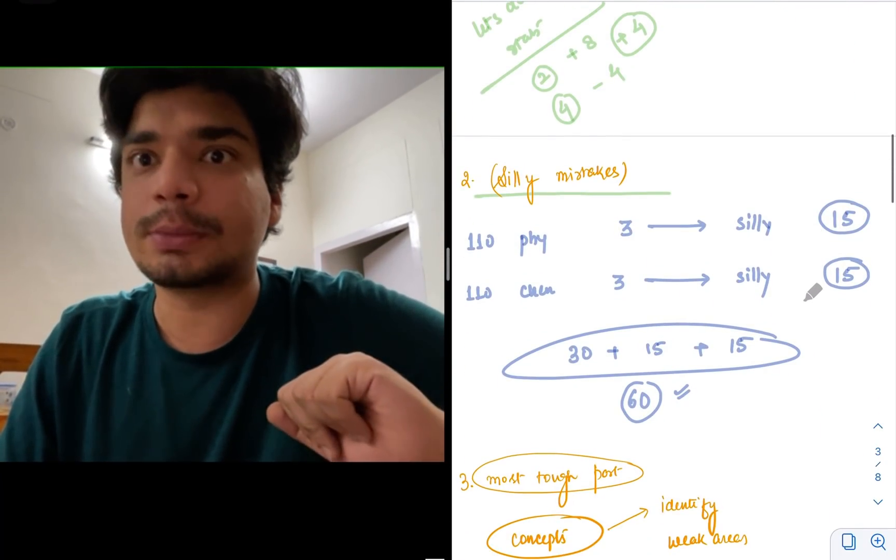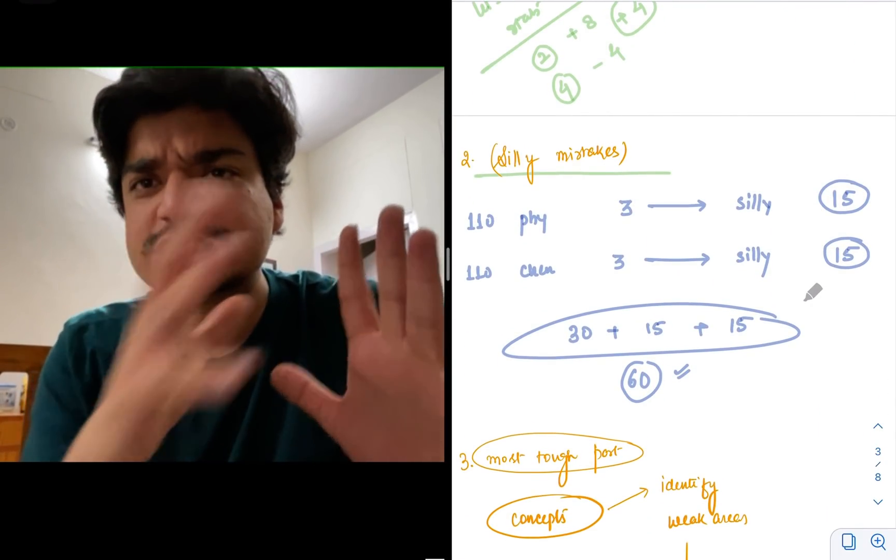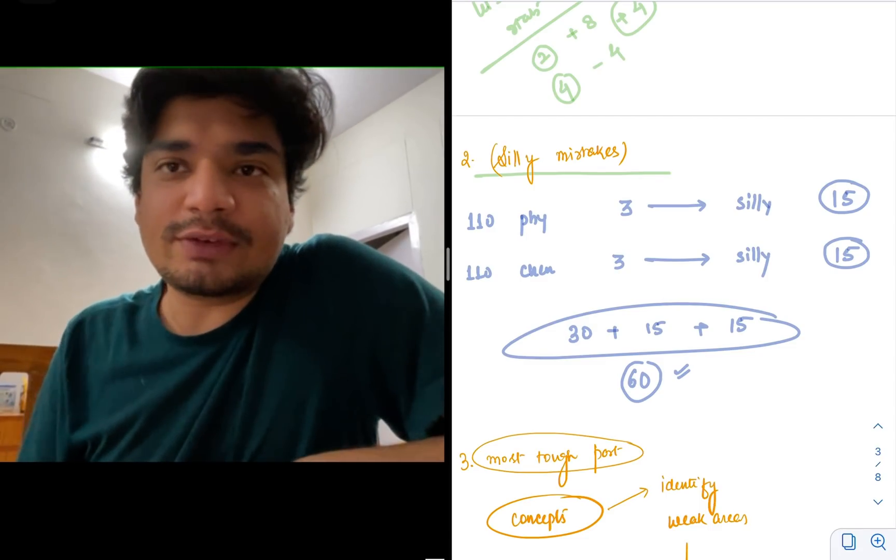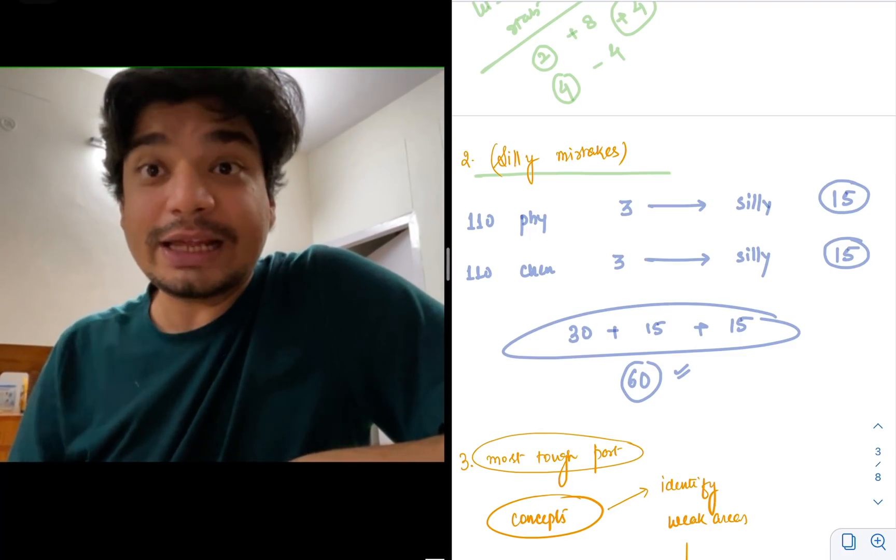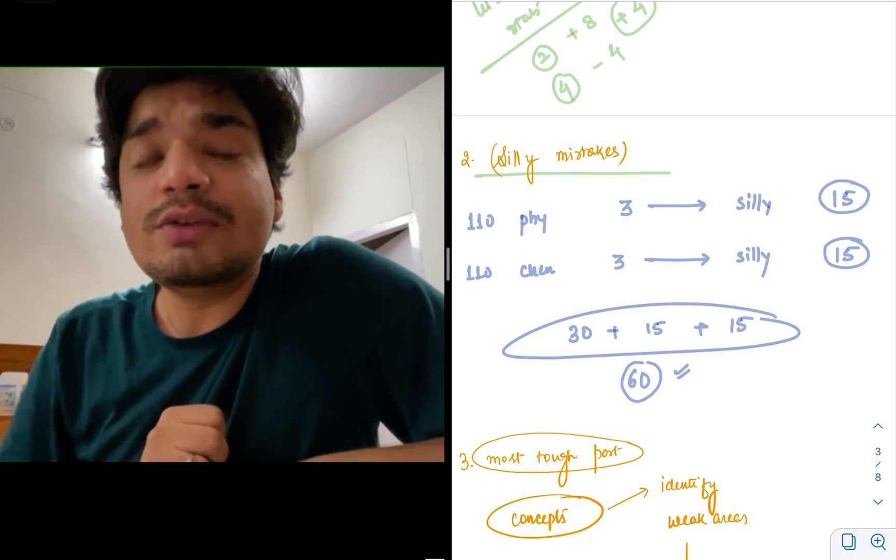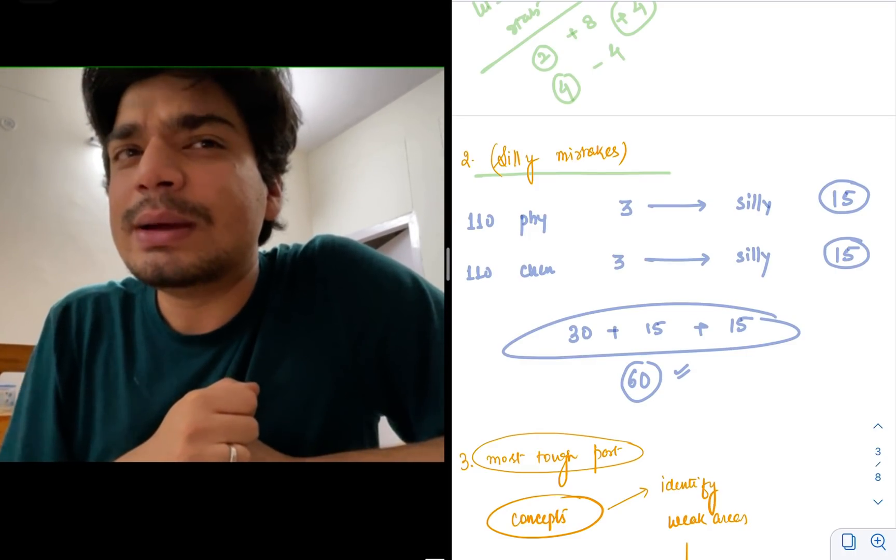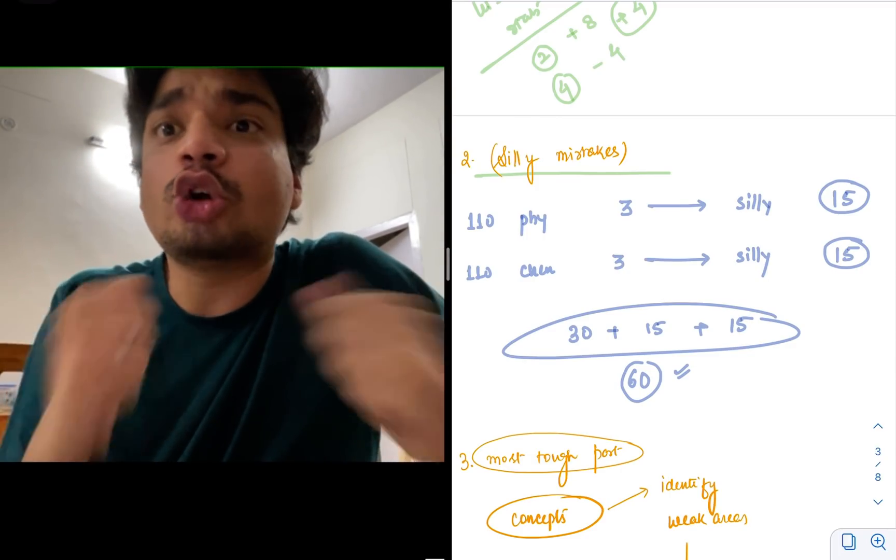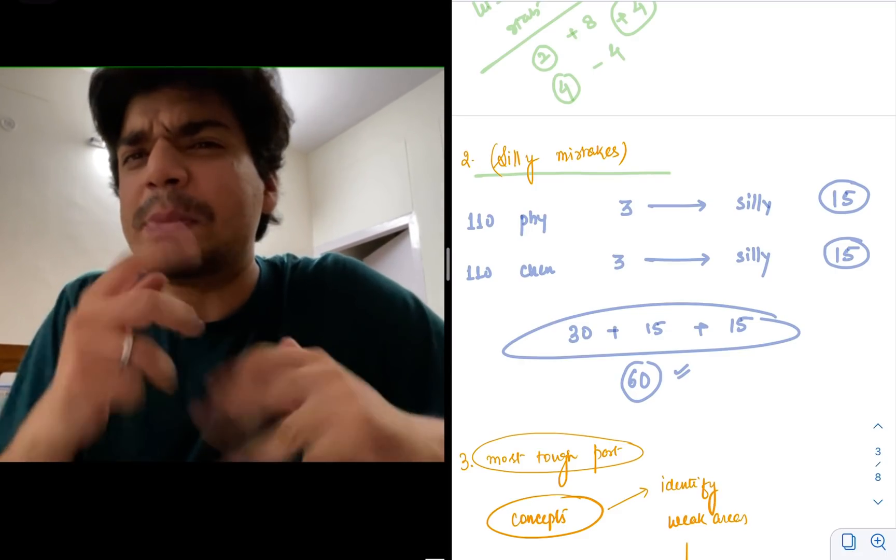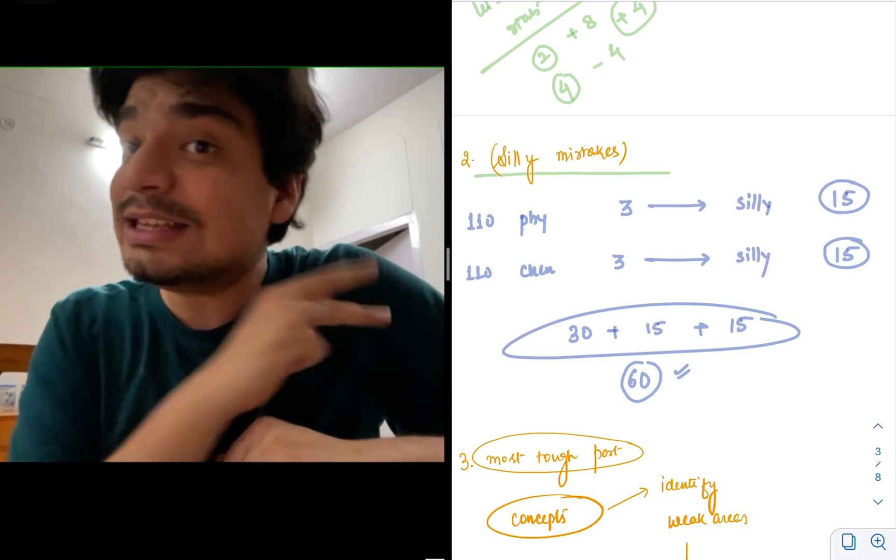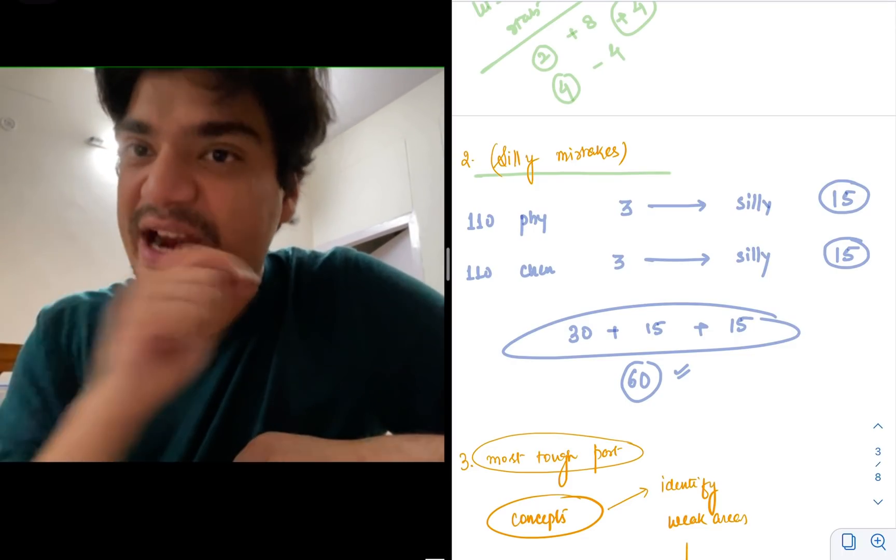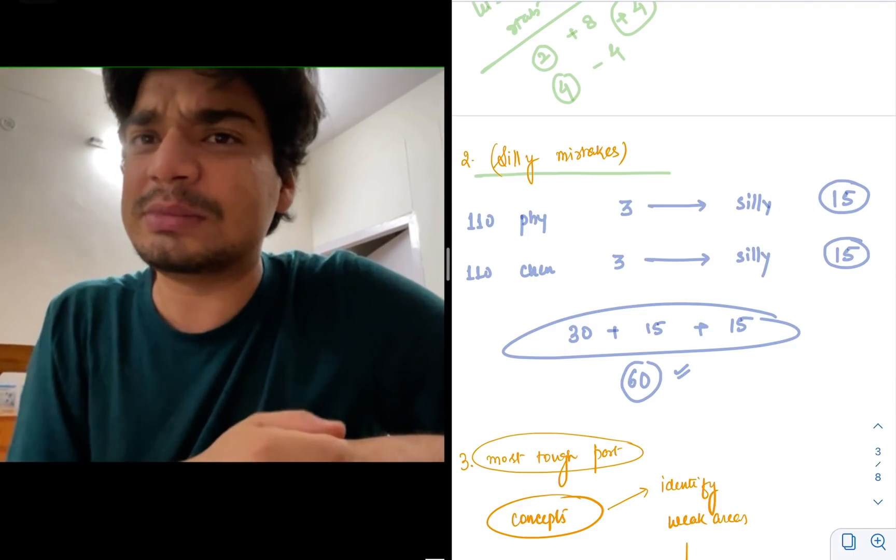Now comes the second most important part. These are again the low-hanging fruit, things which are very easy to get. If you're getting 110 in physics and chemistry last year, I'm sure, I'm definitely sure that in the physics paper, in the chemistry paper, there will be at least three questions that you must have marked wrong where you knew the concept, you knew how to solve the question. But silly mistake, calculation error, or you were short of time in physics and you did the calculation fast, you made a calculation error. In chemistry you knew the answer, bubbling mistake. Something of that sort. There will be at least three questions each in physics and chemistry which you must be knowing. Avoid these silly mistakes. And how to avoid these silly mistakes? Practice.